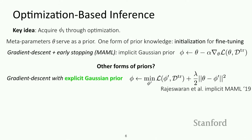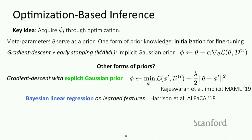There are other ways to think about priors we could impose on the optimization process. For example, instead of having an implicit prior imposed by only doing a small number of gradient steps, we could have an explicit Gaussian prior where we actually regularize the inner optimization to stay close to our meta-parameters theta. This corresponds to an explicit Gaussian prior with mean theta and variance that is a function of lambda. Another form of prior is to do Bayesian linear regression on top of learned features and represent the mean and variance of that Bayesian linear regression as meta-parameters themselves.